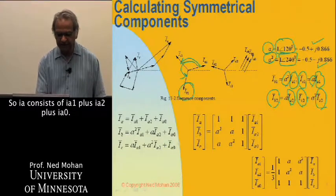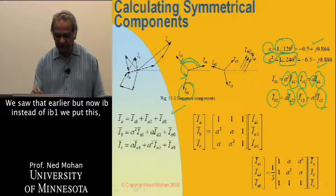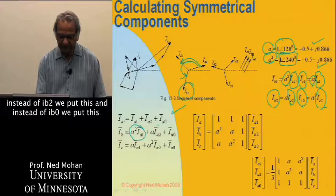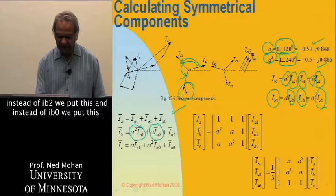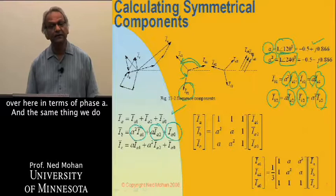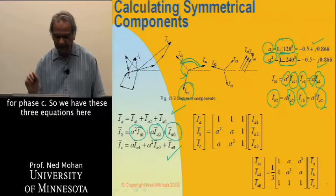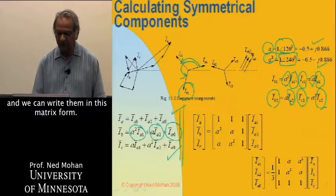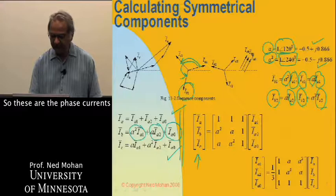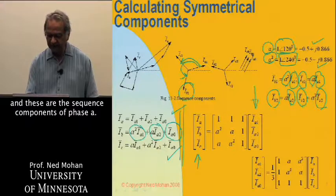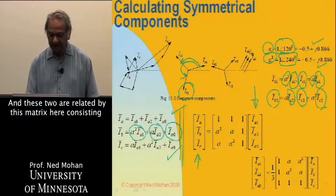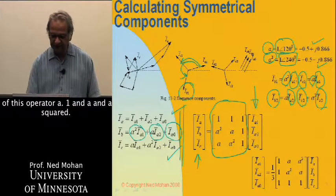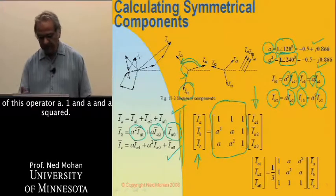Ia, of course, consists of Ia1 plus Ia2 plus Ia0. We saw that earlier. But now, Ib, instead of Ib1, we put this. Instead of Ib2, we put this. And instead of Ib0, we put this over here in terms of phase A. The same thing we do for phase C. We have these three equations here, and we can write them in this matrix form. These are the phase currents, these are the sequence components of phase A, and these two are related by this matrix here, consisting of this operator A: 1 and A and A squared.